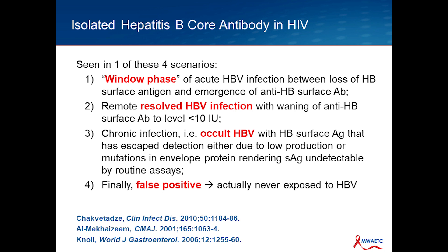This profile emerges from one of four scenarios. The first is the window phase — the period early in infection when the surface antigen has gotten below detectable levels and the surface antibody has not yet appeared. It is in this seronegative window where you can sometimes get an isolated core antibody. You will not encounter this very often as clinicians; it's such a short, discrete, and transient phase, and generally there will be other clinically apparent manifestations of acute hepatitis B.